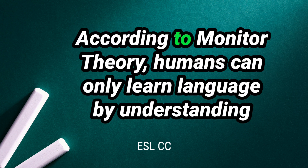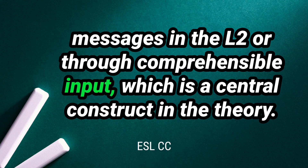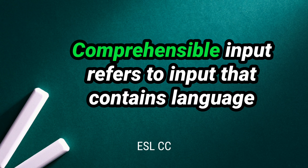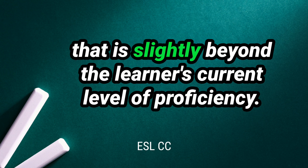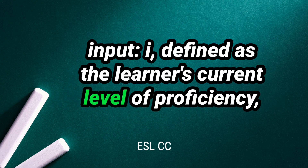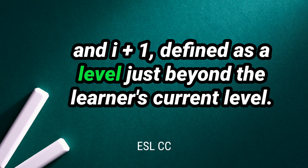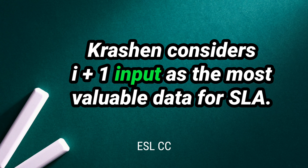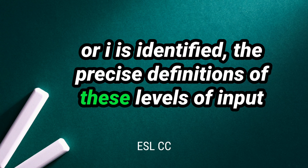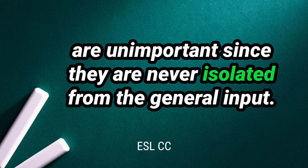The Input Hypothesis. According to monitor theory, humans can only learn language by understanding messages in the L2, or through comprehensible input, which is a central construct in the theory. Comprehensible input refers to input that contains language that is slightly beyond the learner's current level of proficiency. Krashen introduces two constructs in defining comprehensible input: I, defined as the learner's current level of proficiency, and I-plus-1, defined as a level just beyond the learner's current level. Krashen considers I-plus-1 input as the most valuable data for SLA.